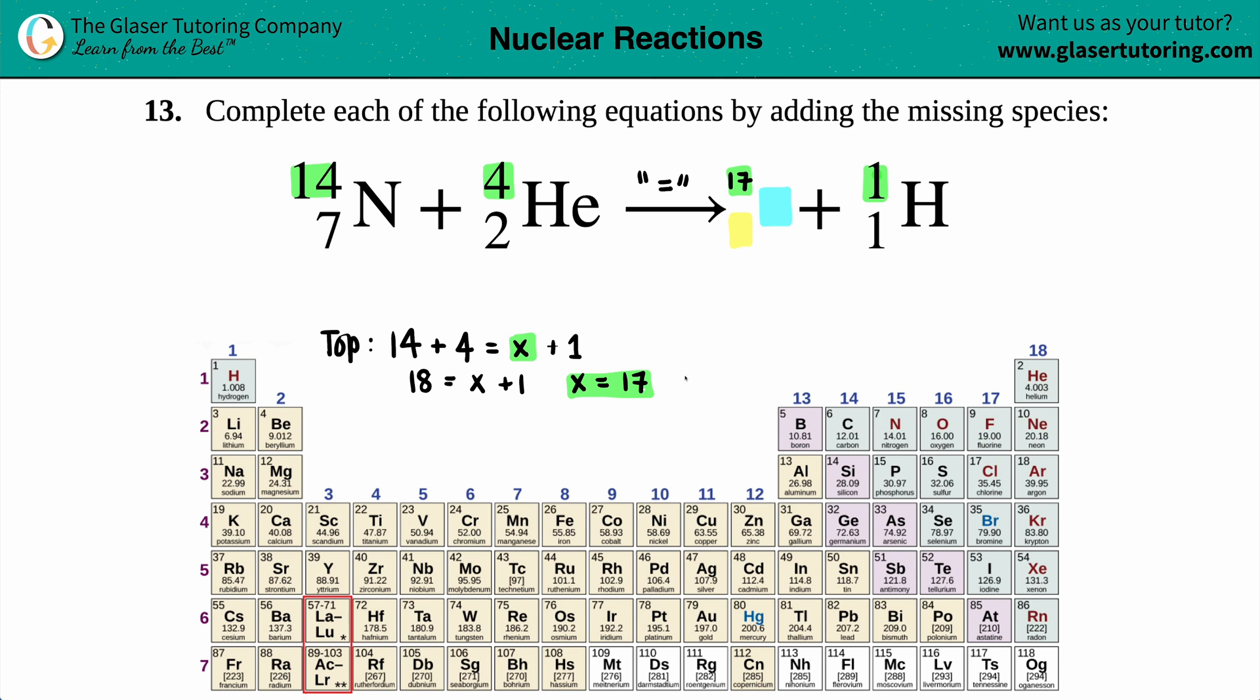Now we do the same thing for the bottoms. And I'll do all that in yellow. We have a 7 coming in plus a 2, and this has to equal the missing link plus 1. And as you get better with this, you don't even have to write it down anymore, but I'm just showing you step by step. So 7 plus 2 equals x, that's what we're solving for, plus 1.